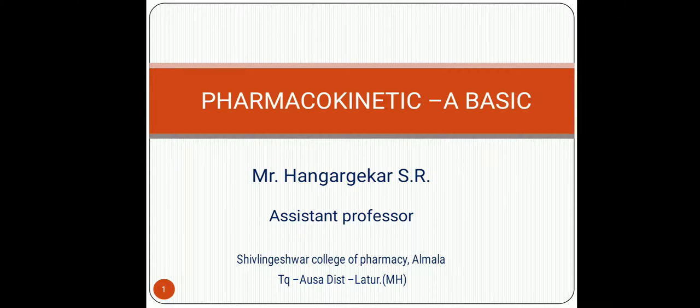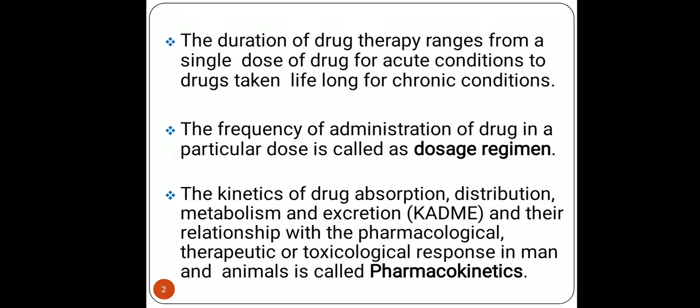Pharmacokinetics is the study of absorption, distribution, metabolism, and excretion. In this chapter we will discuss the different parameters related to pharmacokinetics. The duration of drug therapy ranges from a single dose for acute conditions to drugs taken lifelong for a chronic condition. We will also discuss the dosage regimen and the frequency of administration of a drug from a particular dose.